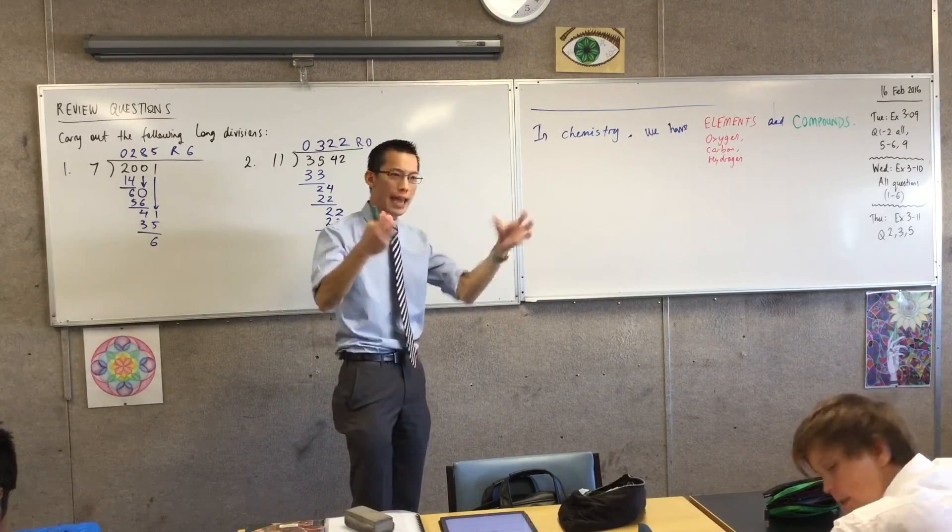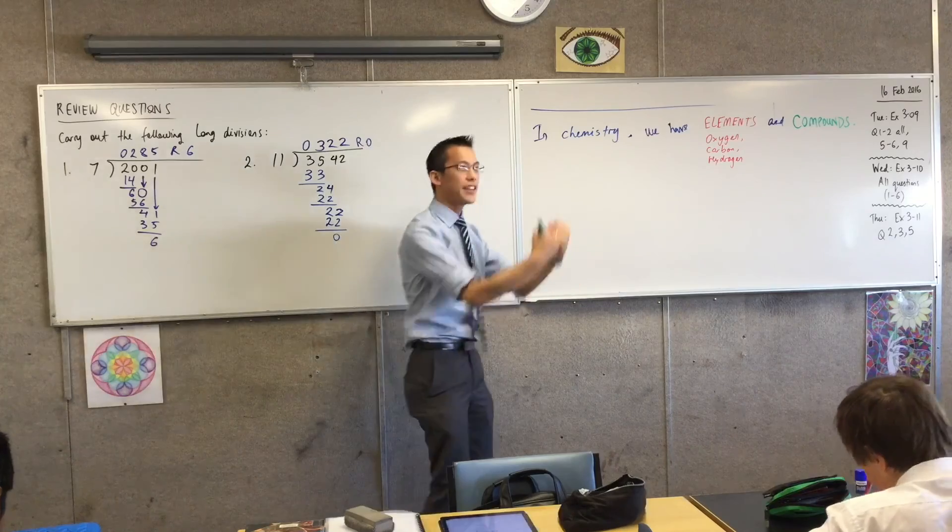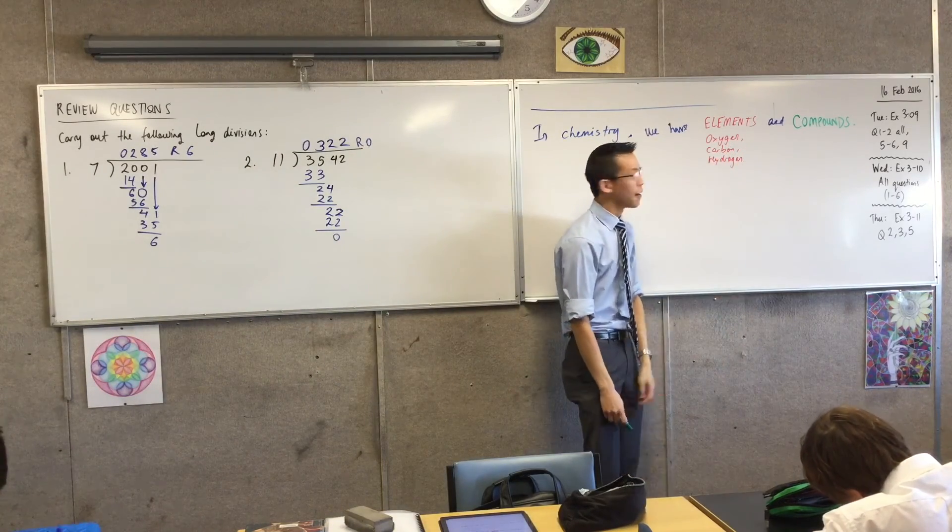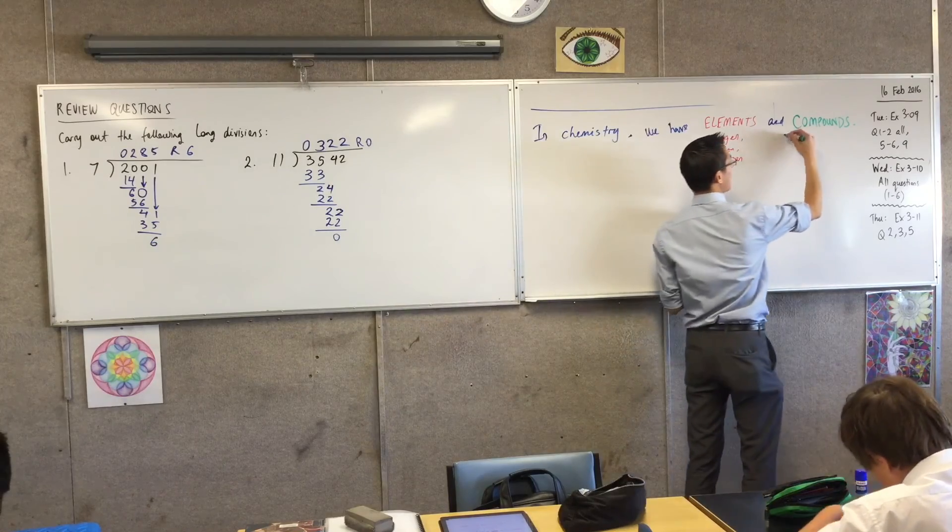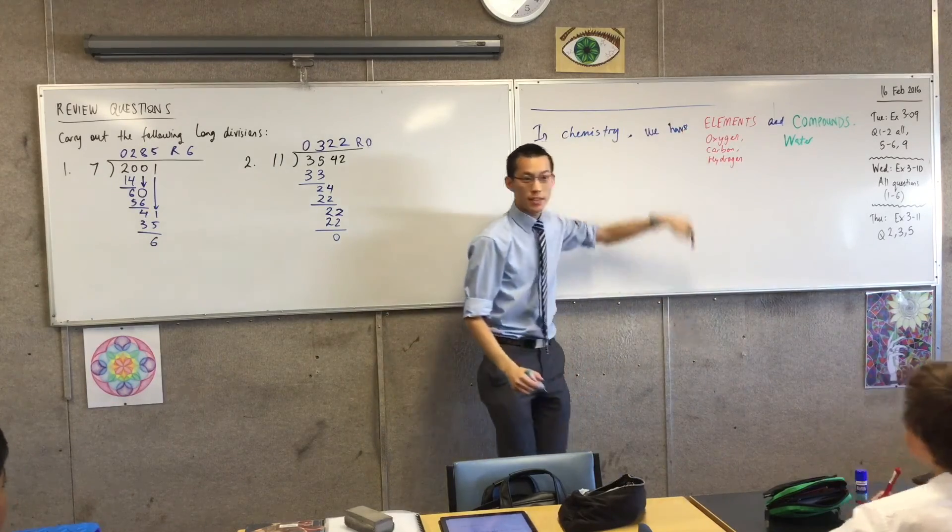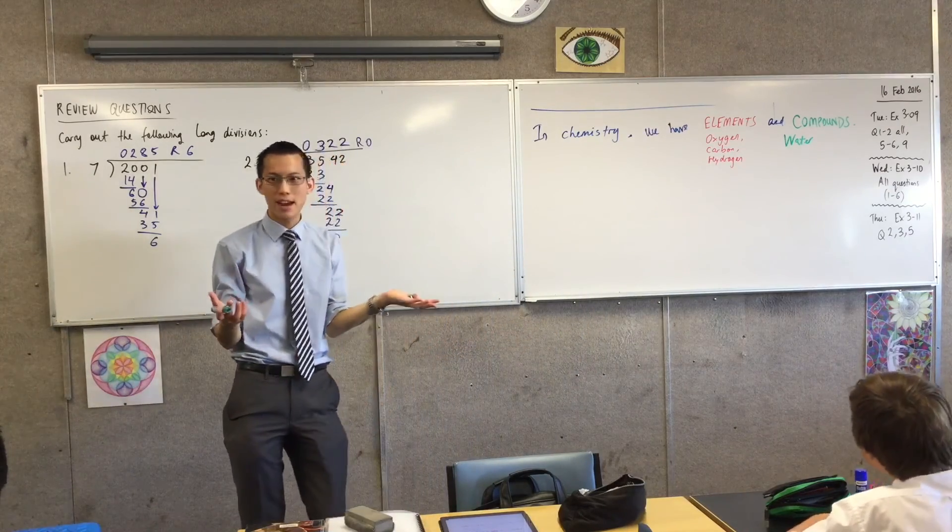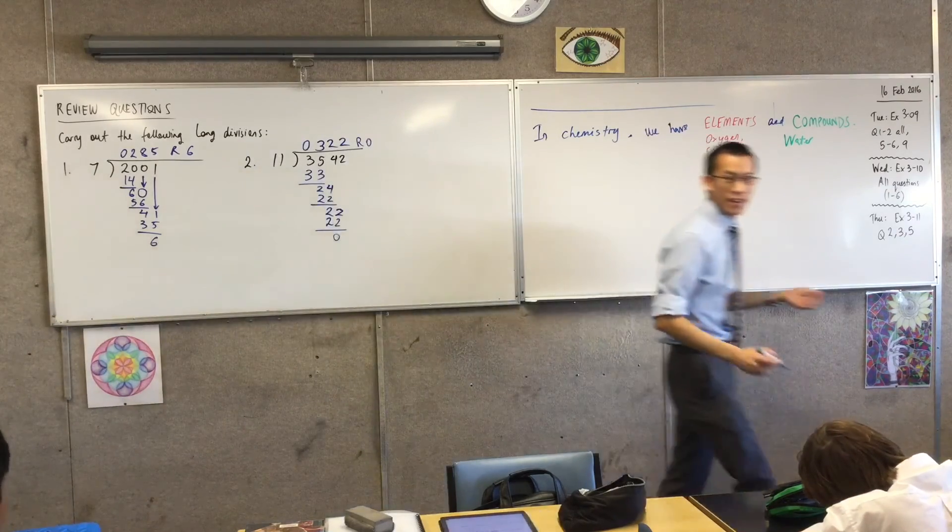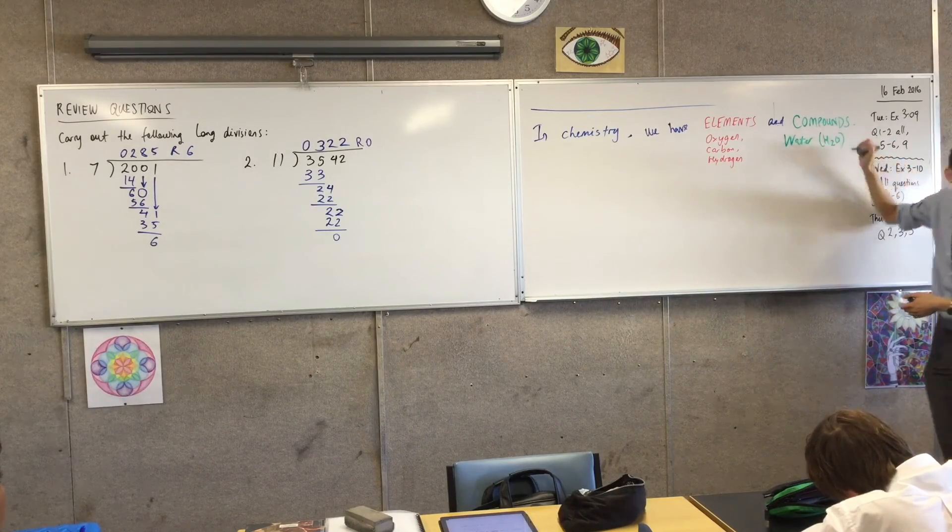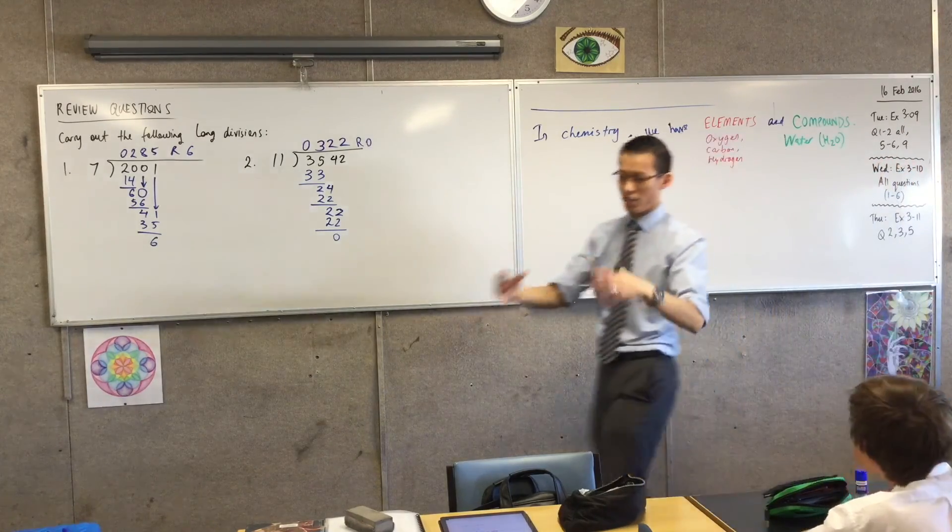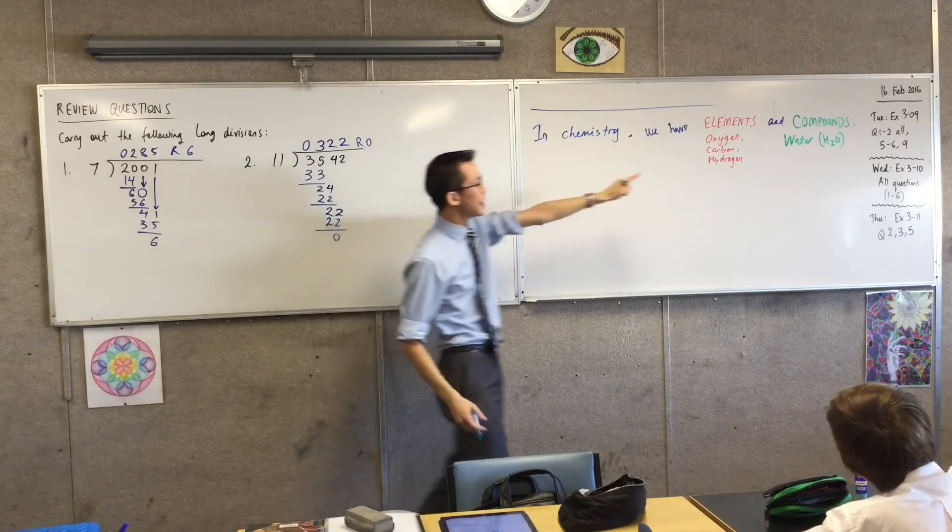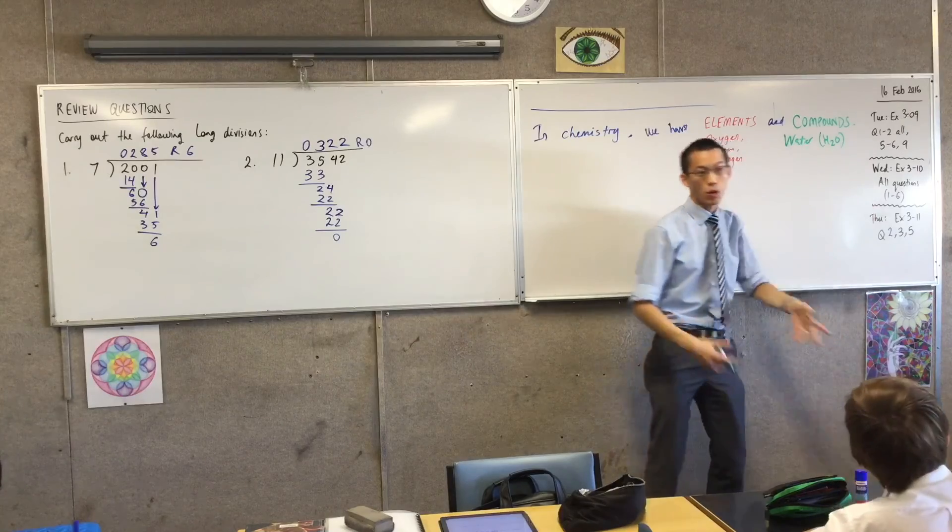But if you take some of these and combine them together you get things called compounds. So compounds that we're very familiar with are things like water. Water is a compound of some of the elements that I've already actually written on the board. Does anyone know which elements they are? Yeah, Nikhil. H2O, hydrogen and oxygen. Very good. We write it as H2O. Two hydrogens and oxygen, you sort of weigh them together and you get a big fat molecule and we call that whole thing water.